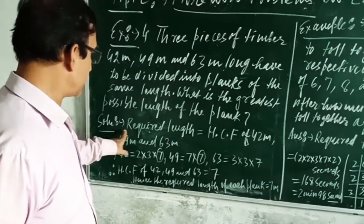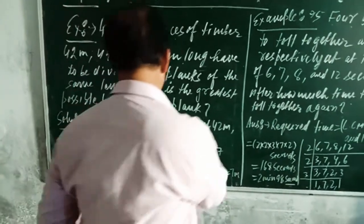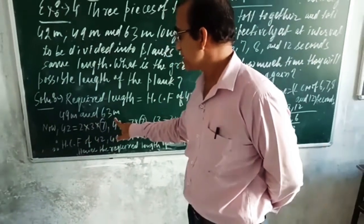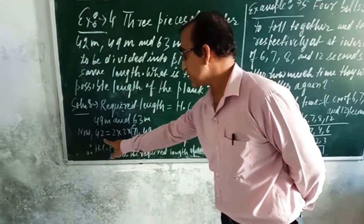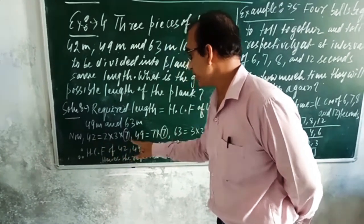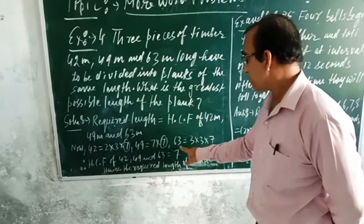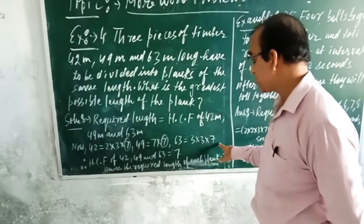Solution: required length is equal to HCF of 42 meter, 49 meter and 63 meter. Now, 42 equals factors of 42 are 2 into 3 into 7, factors of 49 are 7 into 7 and factors of 63 are 3 into 3 into 7.